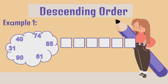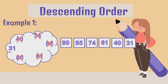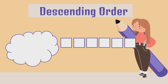Which number is the biggest? 90. Very good. Cross out 90. Next we have 85. Cross out 85. Next is 74. Cross out 74. Next number is 61. Cross out 40. Cross out 40. And the smallest number is 31. Cross out 31. Remember, descending order — we started with the biggest number.